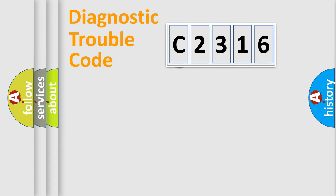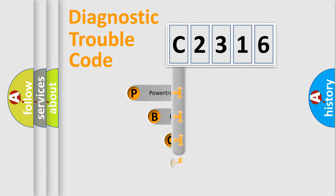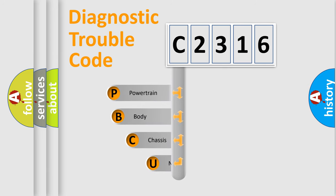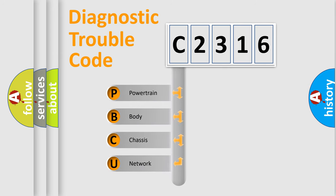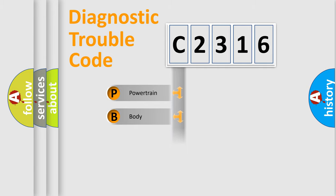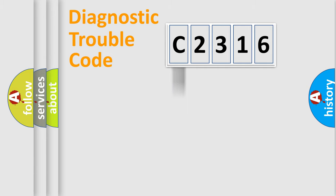Let's look at the history of diagnostic fault code composition according to the OBD2 protocol, which is unified for all automakers since 2000. We divide the electric system of an automobile into four basic units: Powertrain, Body, Chassis, and Network.